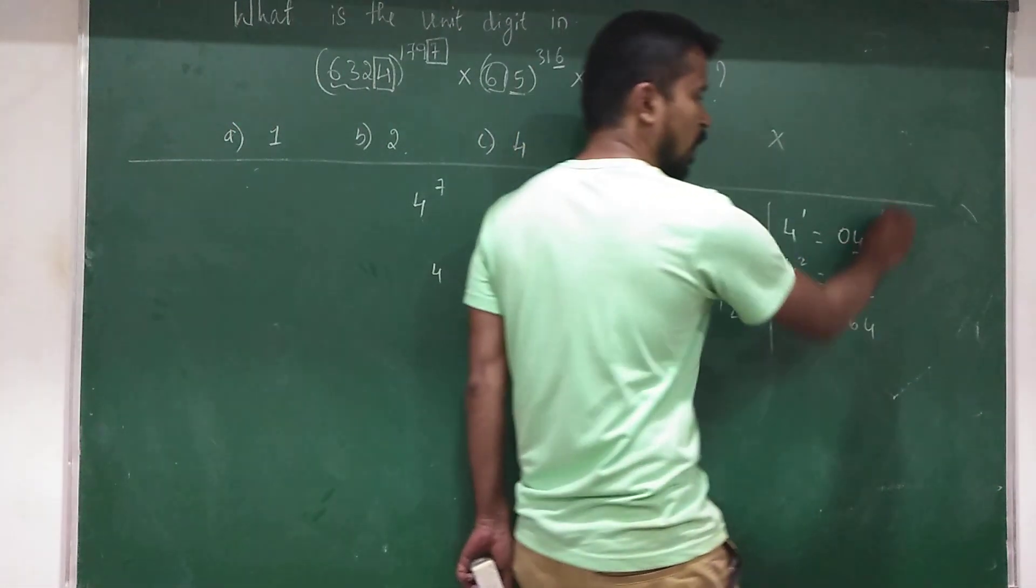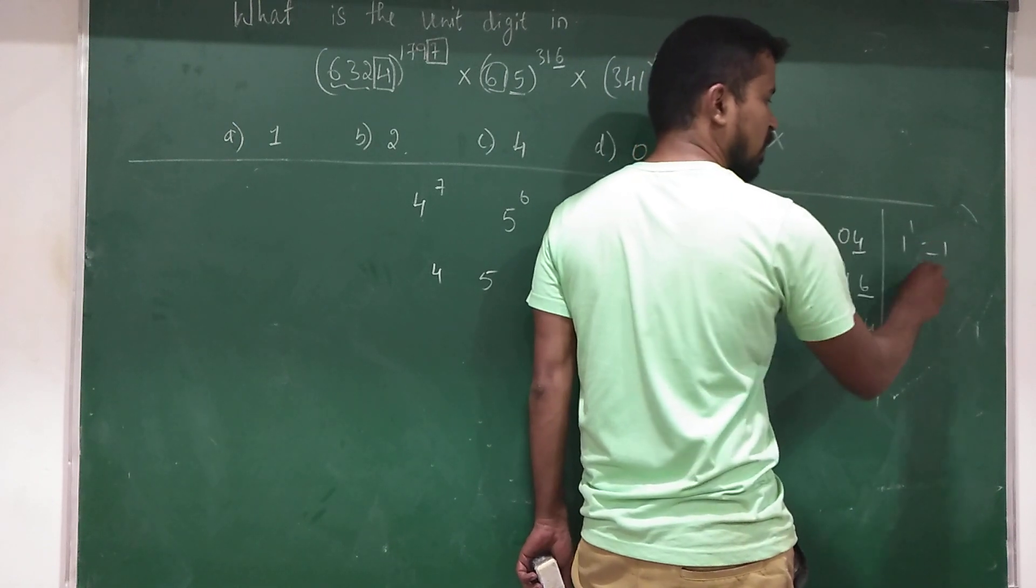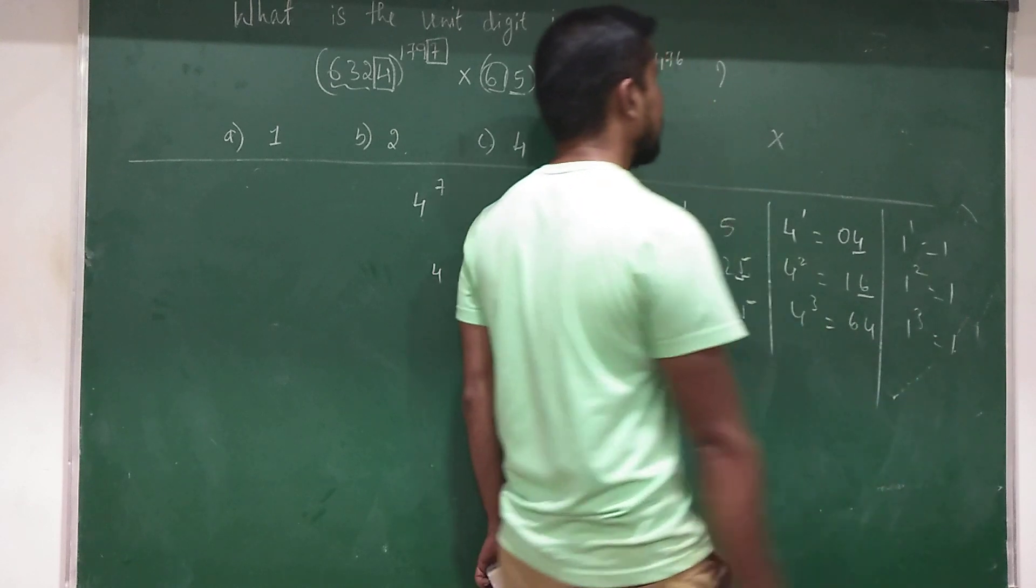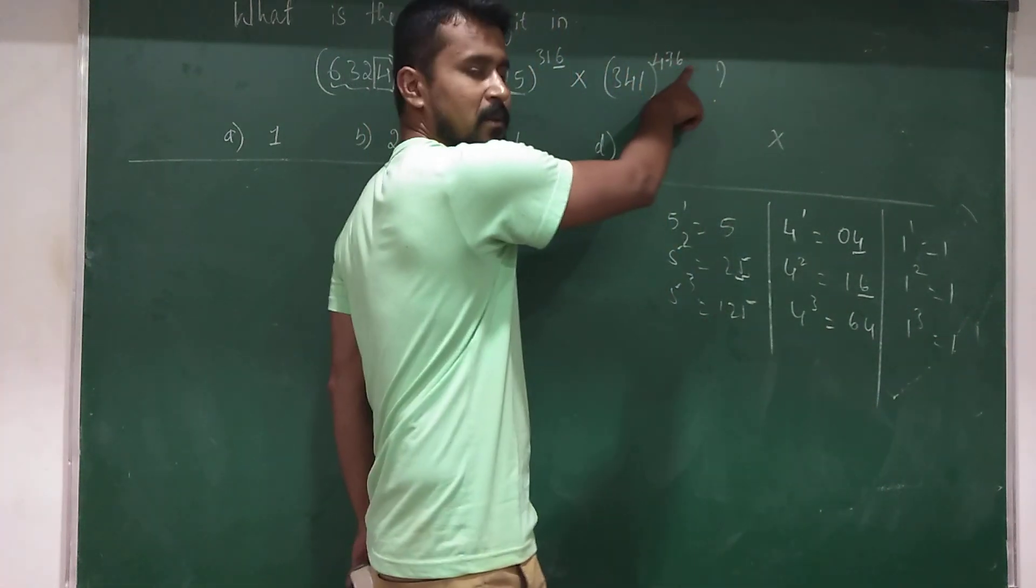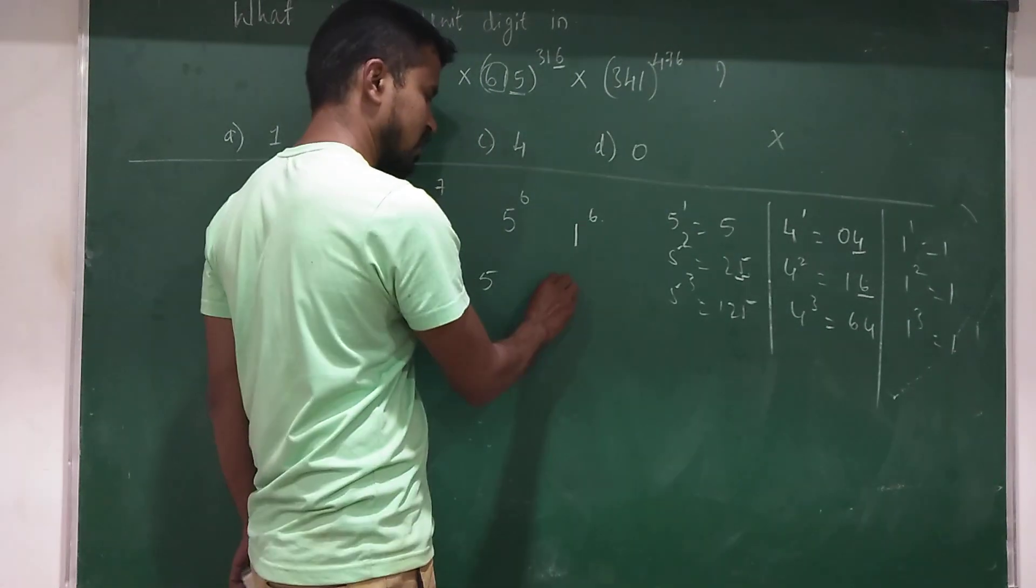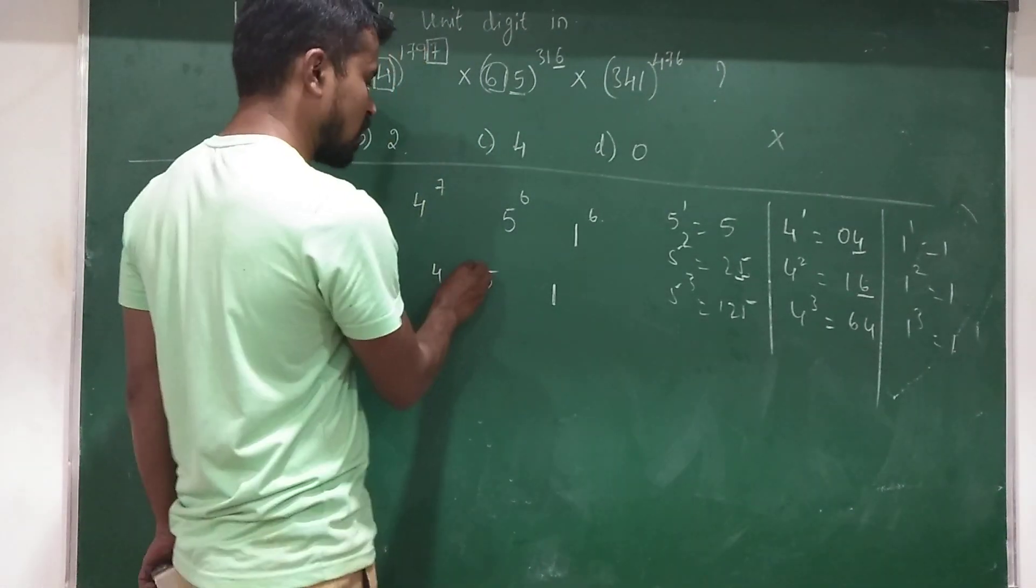Next, coming to 1. 1 to the power of 1 is 1, 1 to the power of 2 is 1, 1 to the power of 3 is 1. So when you multiply 1 by any number, the unit digit will always be 1. That is, 1 to the power of 6 is 1.